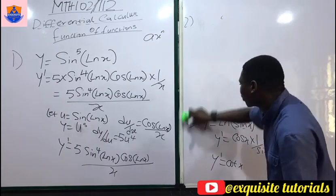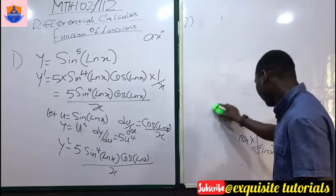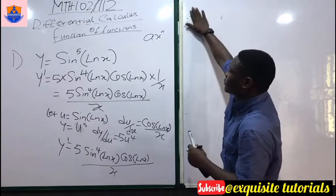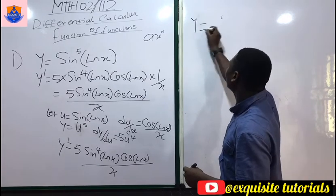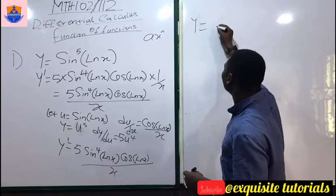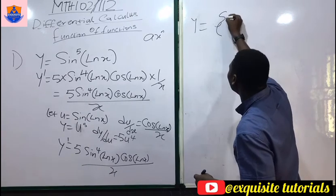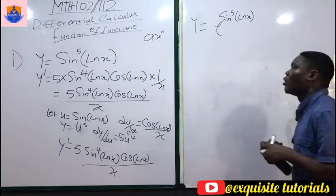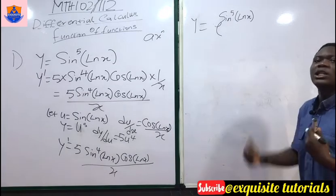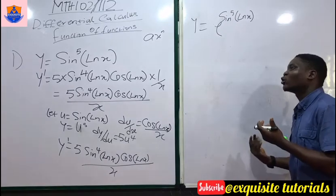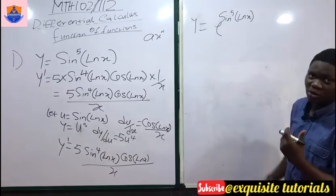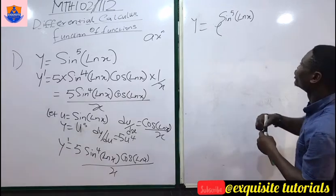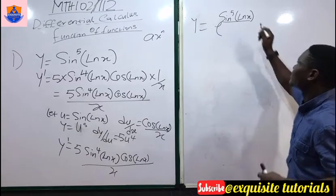Let's say you have a function as complex as y = e^(sin⁵(ln x)) and you are asked to differentiate. The first function here is the exponential. Remember: whenever you have a function, first differentiate what is inside. What is inside the exponential is sin⁵(ln x), so differentiate that first.